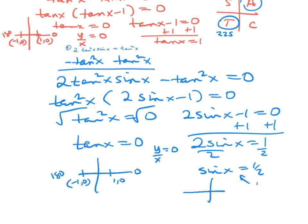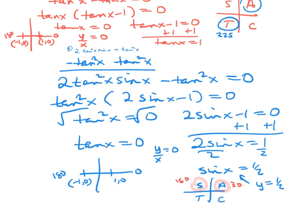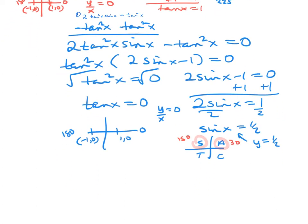For the other factor, 2 sine x equals 1, so sine x equals 1 half. All students take calculus — sine is positive in quadrants 1 and 2. y equals 1 half at 30 degrees and 150 degrees. So this one has four answers: 0, 30, 150, and 180 degrees.